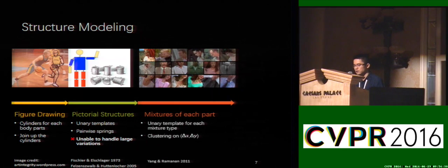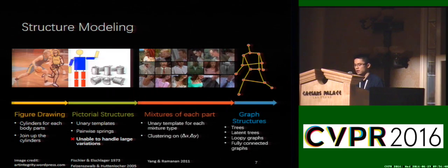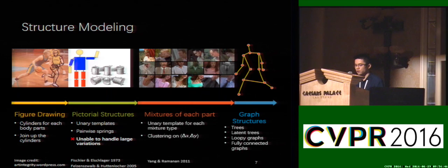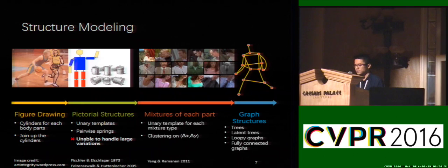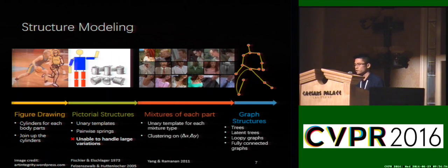On the other hand, the pictorial structures are tree-structured models and suffer from the double counting problem. There are also lots of studies on the structure of graphs, such as trees, latent trees, loopy graphs, or even fully connected graphs. However, these models are usually used for post-processing.